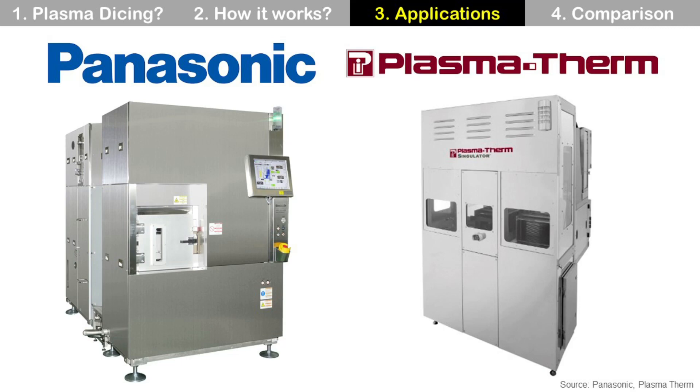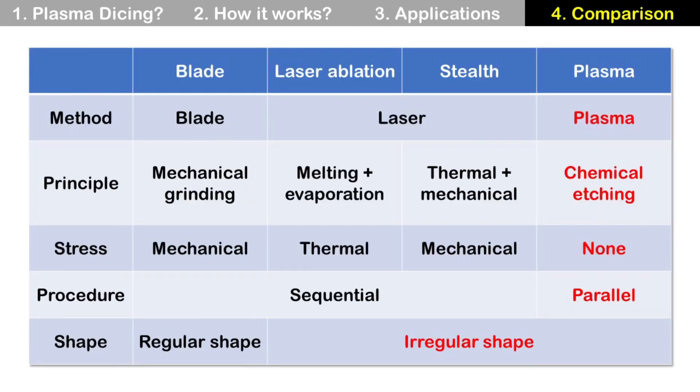Let's summarize plasma dicing by comparing it with other major technologies. Plasma dicing uses plasma, and it is a chemical etching process. So there is no mechanical stress by blade and no thermal stress by laser. Then it increases die strength.